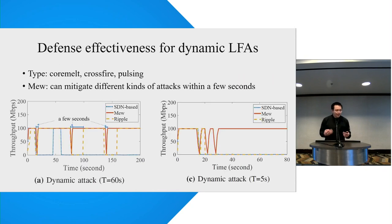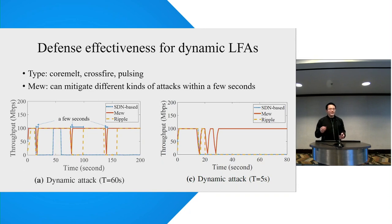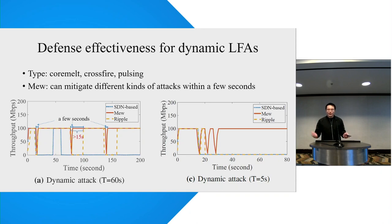Finally, we evaluate defense effectiveness for dynamic link flooding attacks. In this scenario, attackers randomly choose one attack from three candidates every period. We test three periods: 60 seconds, 15 seconds, and 5 seconds. MEW can mitigate different kinds of attacks within a few seconds, even when attackers change their attack very quickly — such as every five seconds. In contrast, Ripple introduces downtime of more than 15 seconds in our environment, and this downtime becomes more significant as attackers change their attack vector more quickly.